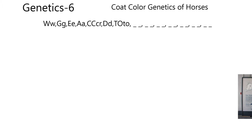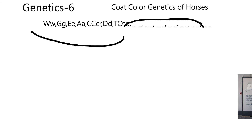Here we are in genetics six, and we're going to be talking about coat color in horses. It's straightforward in some manners and not in others. There are about seven loci, each designated by two different alleles, and another seven that might be called the style genes. So there are about 14 loci total that control color.